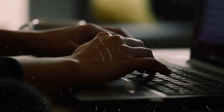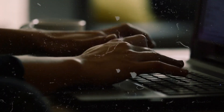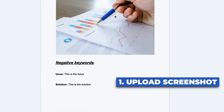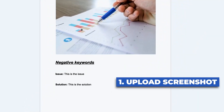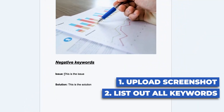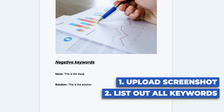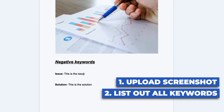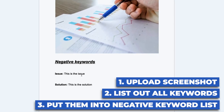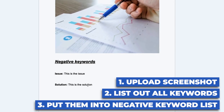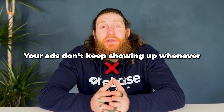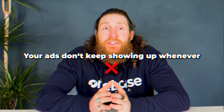Take a screenshot of the keywords that are triggering the ads but not converting and upload it to the document. List out all those keywords in the issue section, and for the solution, put all those keywords in the negative keywords list so your ads don't keep showing up whenever someone searches for those exact terms.